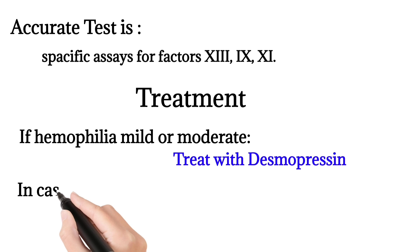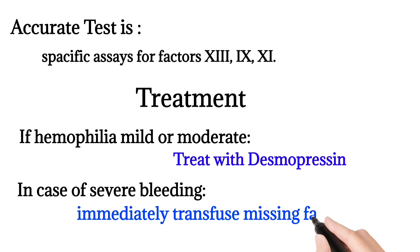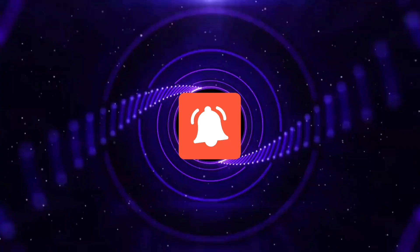Treatment: if haemophilia is mild or moderate, treat with desmopressin. In case of severe bleeding, immediately transfuse the missing factor; if not available, use cryoprecipitate. Thank you for watching — for more videos, kindly like, share, and subscribe.